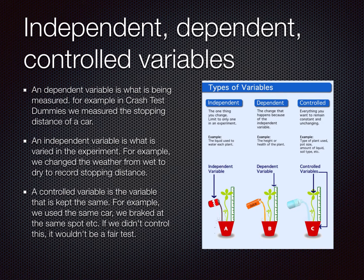A dependent variable is what is being measured. For example, when we did the crash test dummies one, we measured the stopping distance of a car. As you can see by the picture over here, they measured the growth of a plant. So the dependent variable is what we are actually measuring.